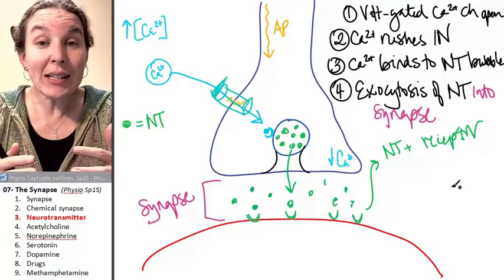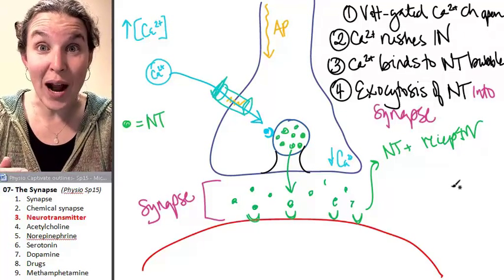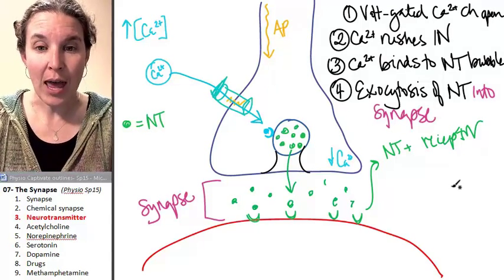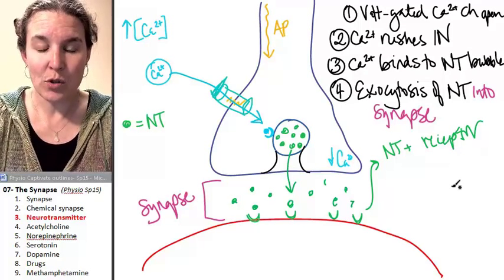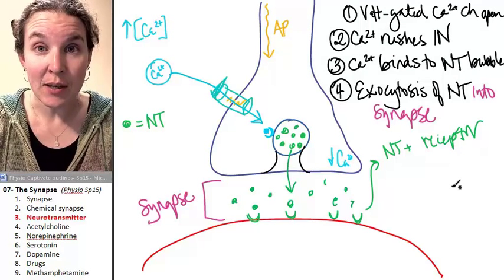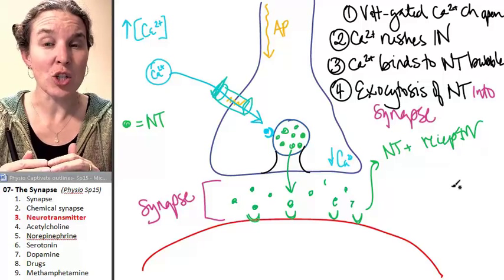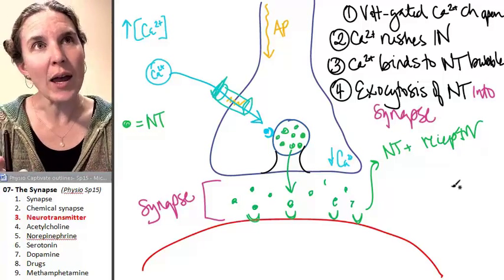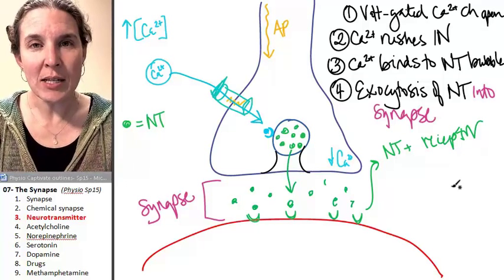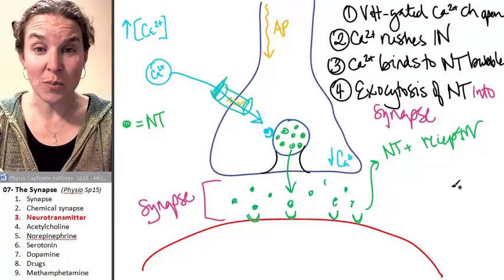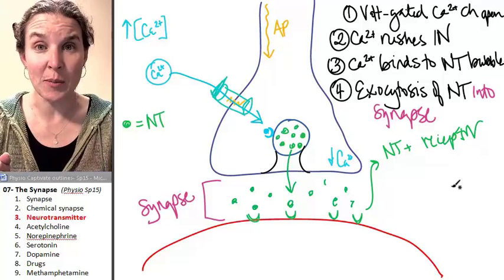So as quickly as an action potential can travel down a neuron and dump neurotransmitter into the synapse, it removes the neurotransmitter just as fast. That way, if I want to send the message again, I'm going to send another action potential and dump more neurotransmitter.